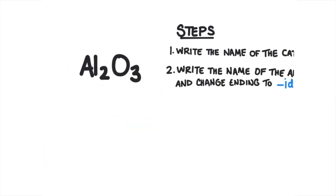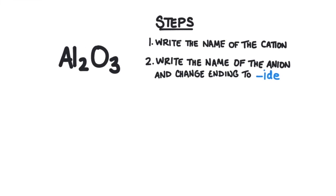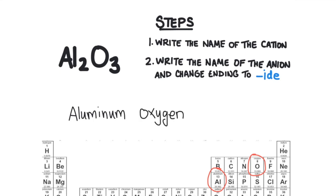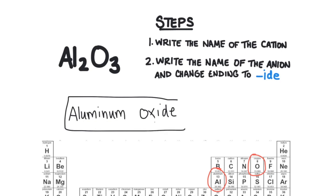Here's a simple example where we have two elements coming together to form a compound. You may recognize these as being aluminum and oxygen — you can check your periodic table to find aluminum here and oxygen here. Following the steps: first, write the name of the cation — that's aluminum. Then write the name of the anion — oxygen — and change the ending to -ide, giving us oxide. So we come up with aluminum oxide as the name.